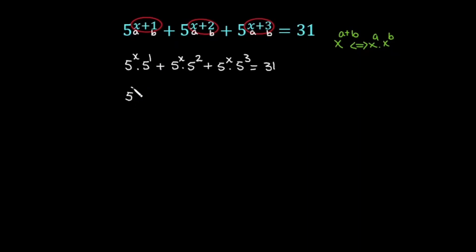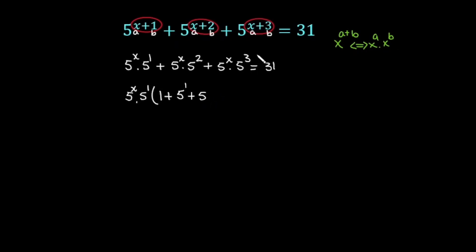Now 5 raised to the power x is common across all terms, so I factor it out. Inside the bracket, we are left with 5 raised to the power 1 plus 5 raised to the power 2 plus 5 raised to the power 3, which simplifies using the exponents. This gives 5 raised to the power x times the bracket expression is equal to 31.